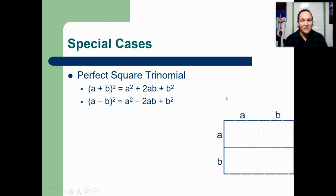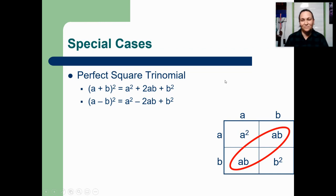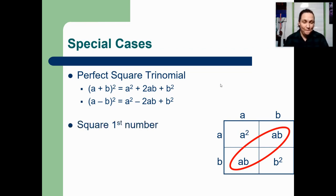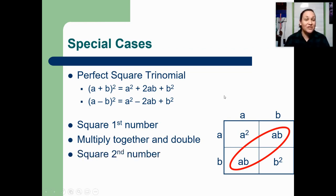Just to confirm one more time from the box: the first number is being squared — a times a is a squared; the last number is being squared — b times b is b squared; and on the diagonal, I multiplied a times b and I have two of them, which is where the 2 in front comes from. If you like steps written out: square the first number; multiply together the two numbers and double it — that's the diagonal; and square the second number. Three terms — it is a trinomial.